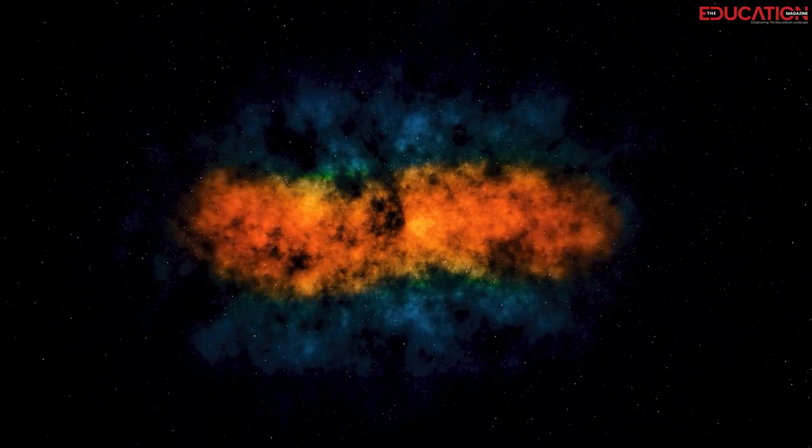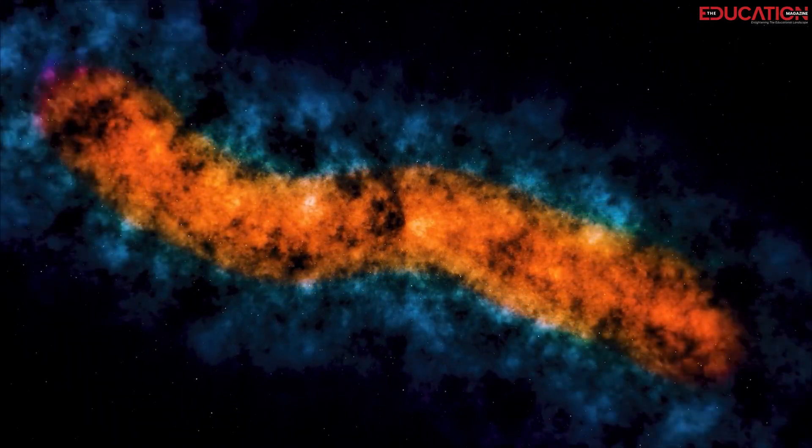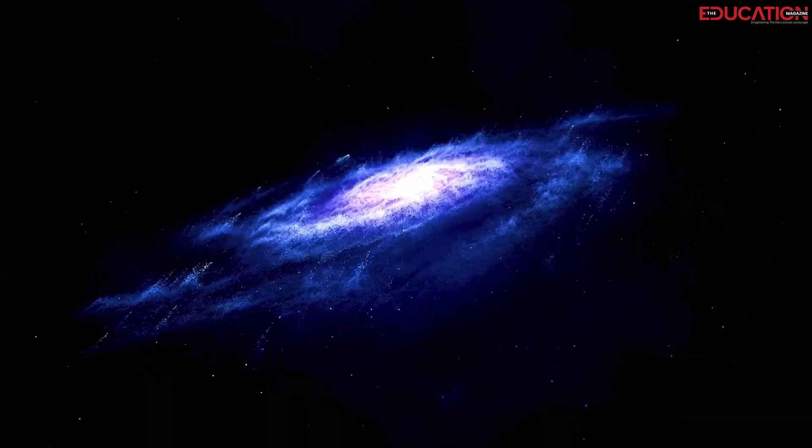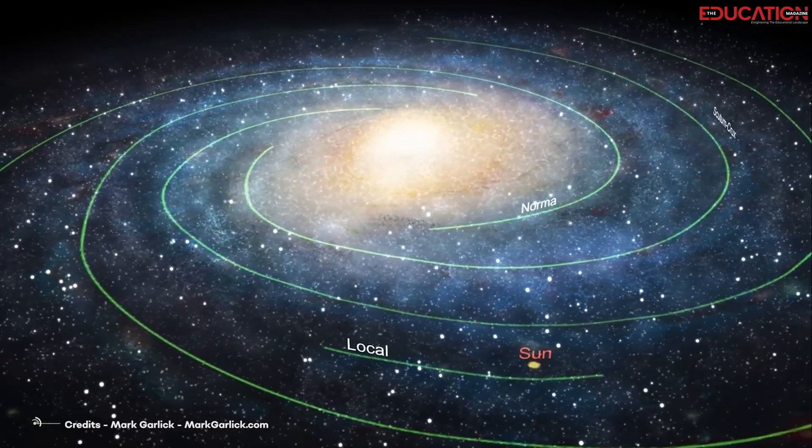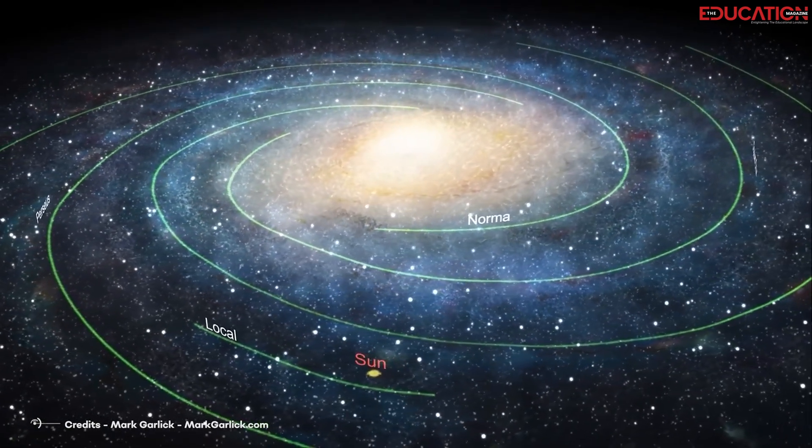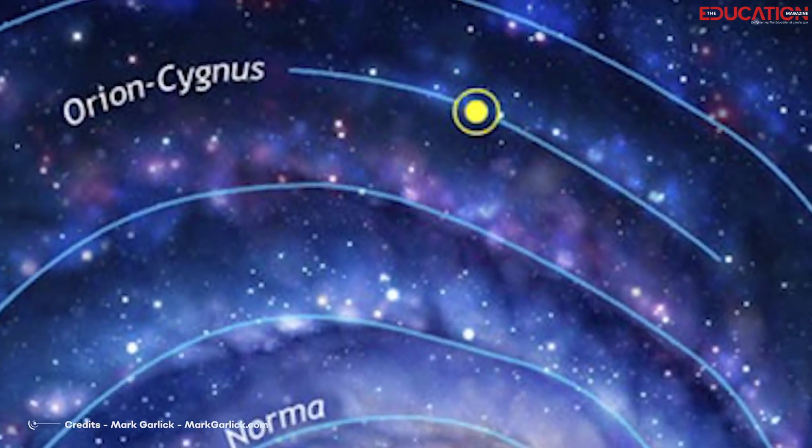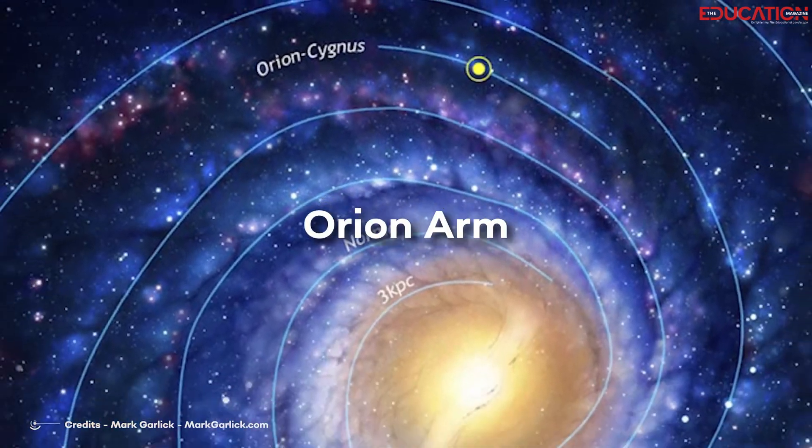One of the most fundamental questions about our place in the universe is our location within the Milky Way galaxy. The Milky Way is a spiral galaxy with a central bulge and four major spiral arms. Our solar system is in the Orion Arm, one of these spiral arms.